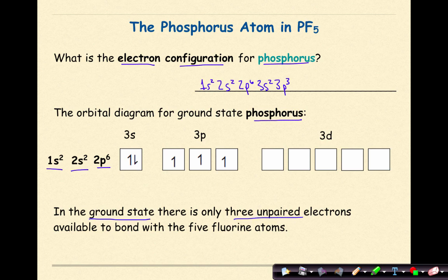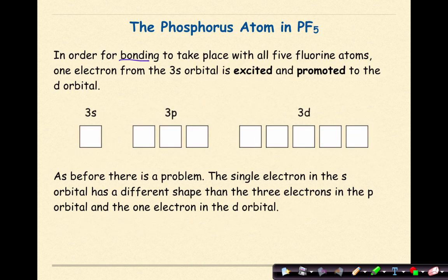there are only three unpaired electrons available to bond with the 5-fluorine atoms. In order for bonding to take place with all 5-fluorine atoms,